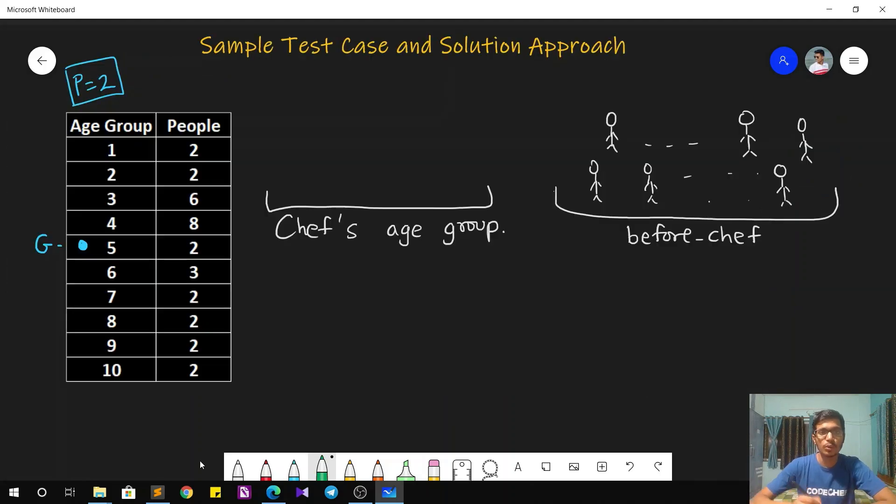The solution approach goes as follows. So it is given that chef is present in age group 5 in our sample test case. So it definitely means that the age group that are higher than chef will definitely get vaccinated first. So age group 6 to 10 are the people that are going to get vaccinated before chef. So let's denote the total number of people in these groups by the variable before chef. So the total as you can see over here is 4 times 2 plus 3 that is 11. So these are total of 11 people.